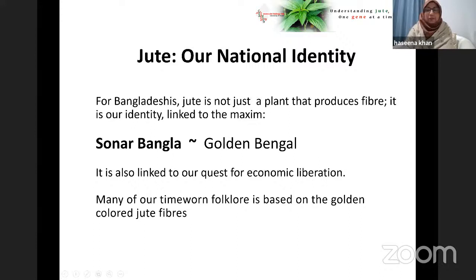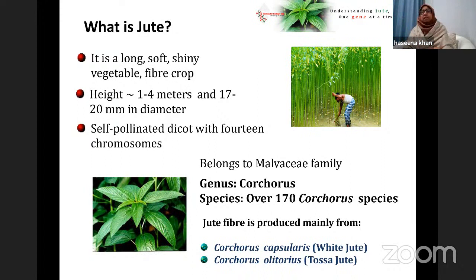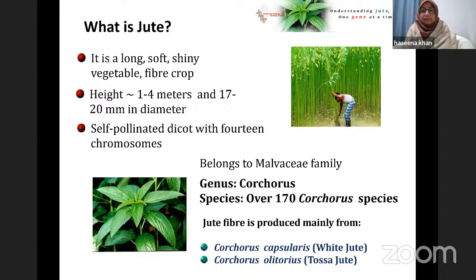So what is jute? It is a long, shiny, and very soft vegetable crop. It attains a huge biomass — a height of about one to four meters with a diameter between 17 to 20 millimeters — in just four months. It is self-pollinated and belongs to the Malvaceae family. It belongs to the genus Corchorus, and there are over 170 Corchorus species, but only two are cultivated.